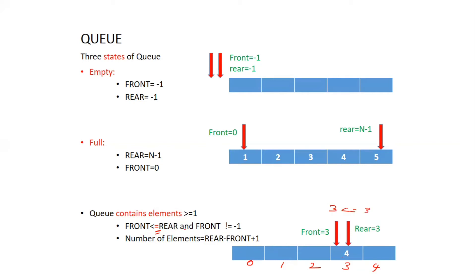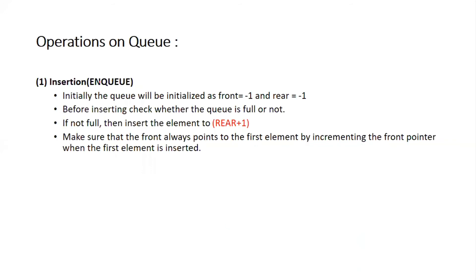In general, front is less than or equal to rear. Also, when front equals minus one, that means the queue is empty. If front equals rear, the number of elements is rear minus front plus one, which equals one. These are the different states of the queue. Coming to the operations on the queue: for the enqueue (NQ) operation, the queue is initialized with front equal to minus one and rear equal to minus one.